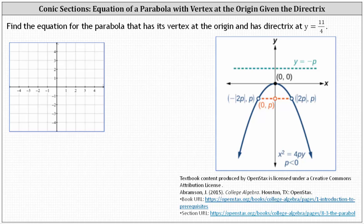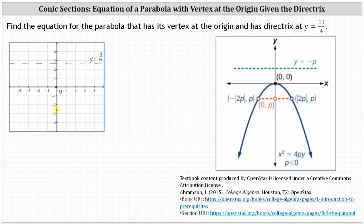For the first example, we're asked to find the equation for the parabola that has its vertex at the origin and directrix at y equals 11 fourths. Let's first plot the vertex at the origin. The directrix is the horizontal line y equals 11 fourths. Recall 11 fourths is equal to 2.75, and therefore the directrix is this horizontal line here. Notice that the directrix is 11 fourths units above the vertex, which indicates the focus must be 11 fourths units below the vertex at the point zero comma negative 11 fourths, which would be this point here.